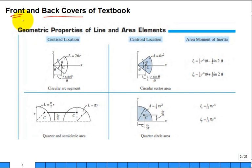So what does it have on one of the back covers? Geometric properties of line and area elements. So if you wanted to know the centroidal location, here's the easy one to understand of a quarter circle area. They put a little C for where the centroid is and then you can tell by this has a lowercase r for the radius and then they tell you what is the location of that centroid both in the x and in the y.